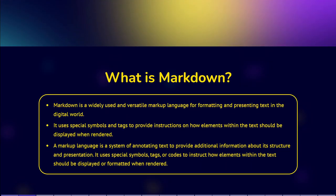What is Markdown? Markdown is a versatile and widely adopted markup language that has revolutionized the way we format and present text in the digital world. It is an essential tool for writers, developers, and content creators alike. A markup language is a system of annotating text to provide additional information about its structure and presentation. It uses special symbols, tags, or codes to instruct how elements within the text should be displayed or formatted when rendered. HTML is another markup language.